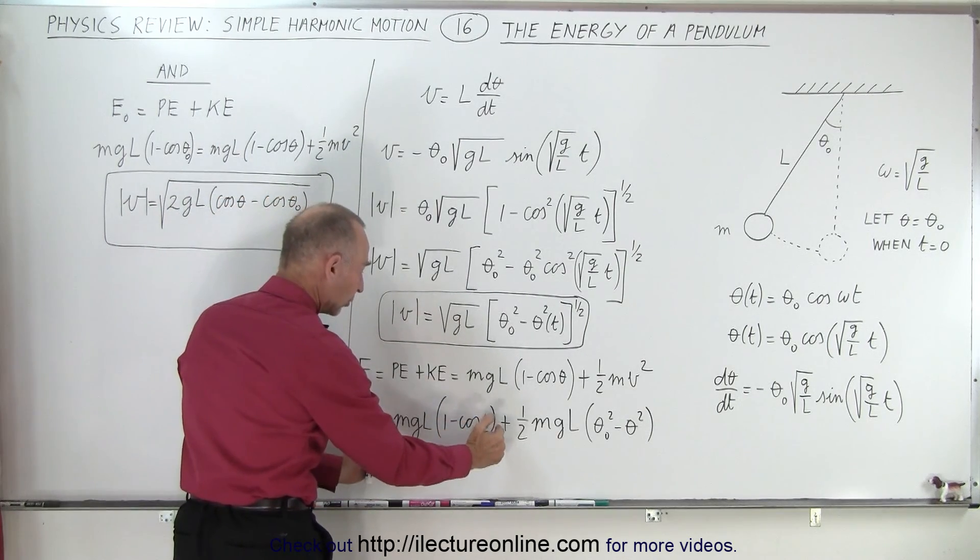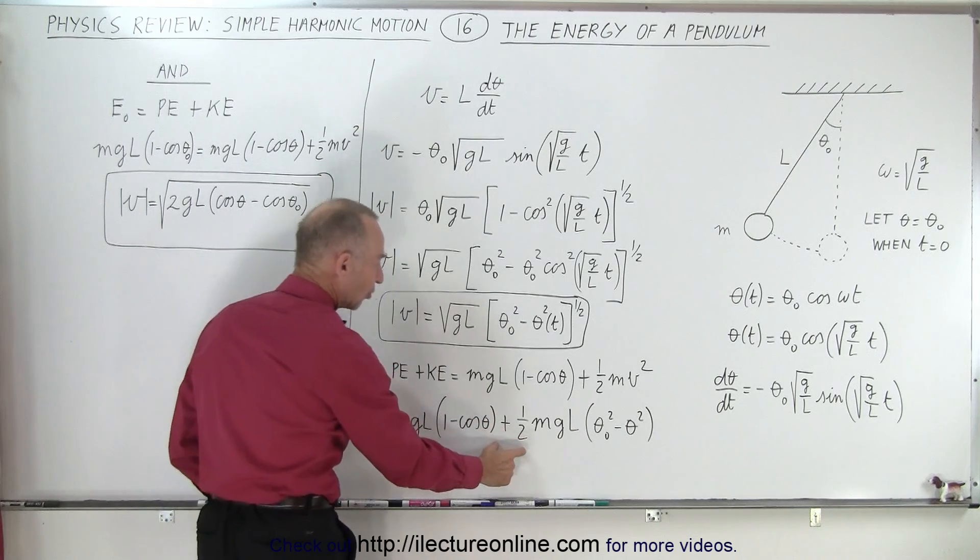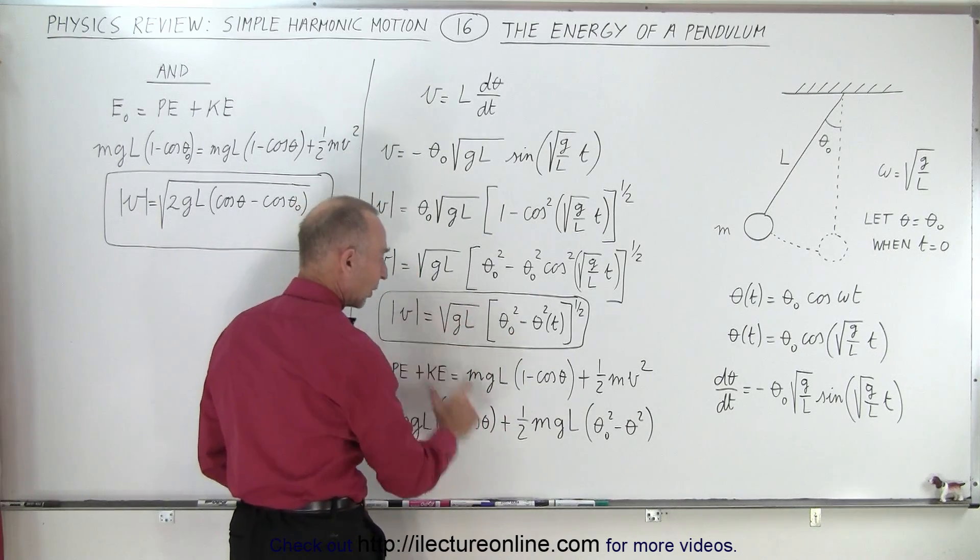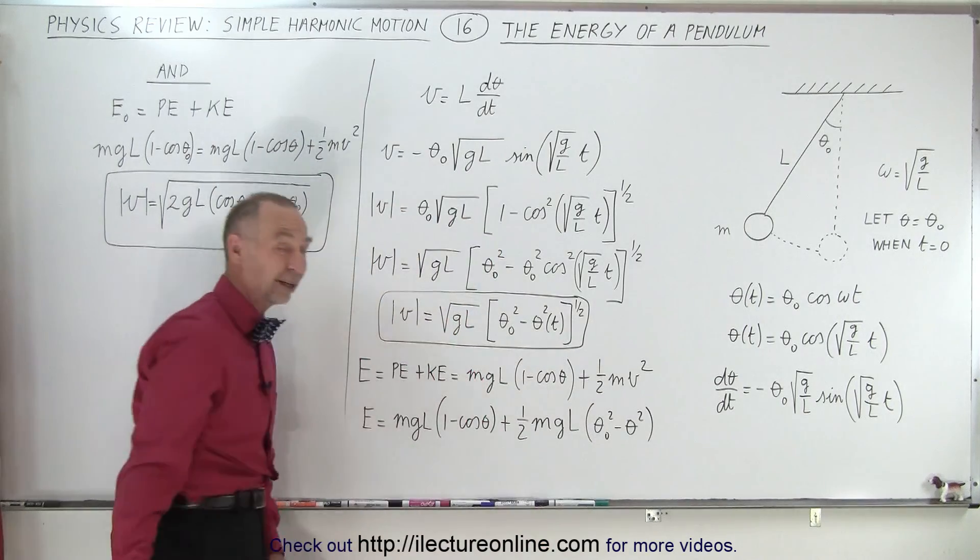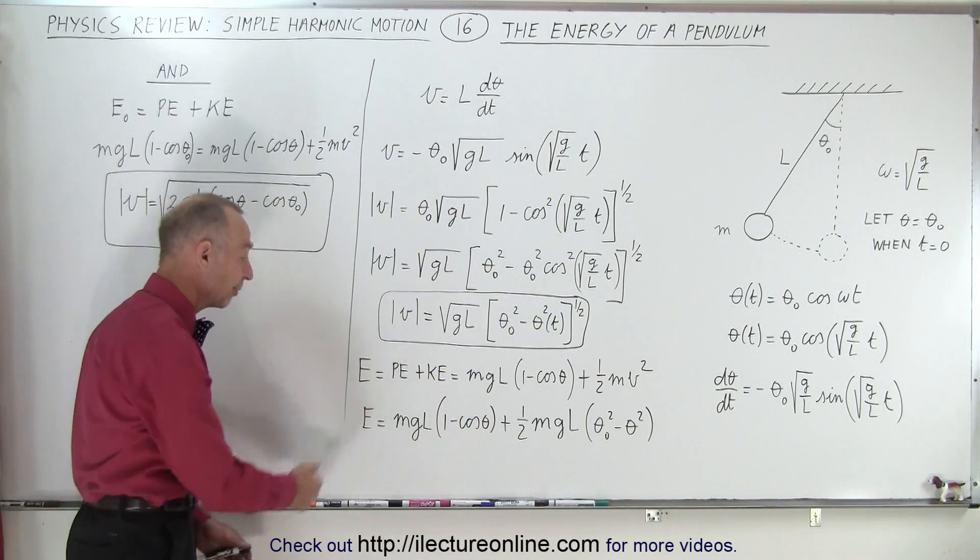The potential energy will always be equal to this, and the kinetic energy, which is one-half mv squared. We take this and we square it, we end up with this expression right here. So that's the expression for the energy of a pendulum.